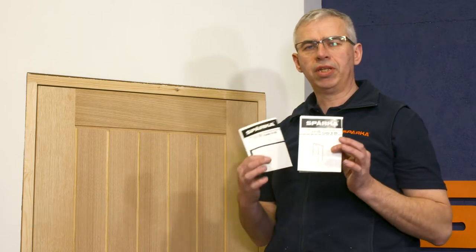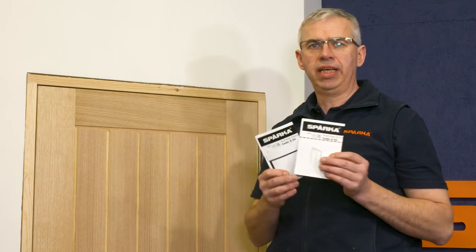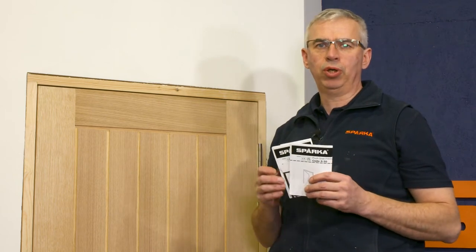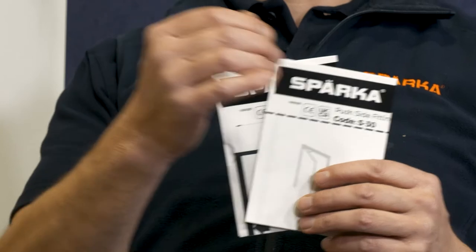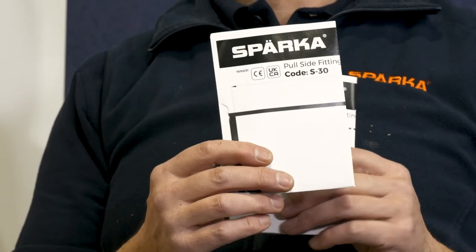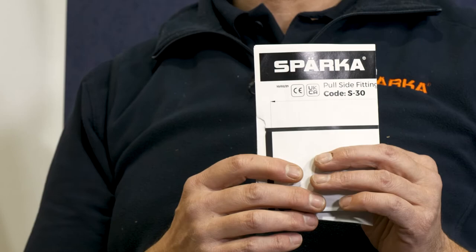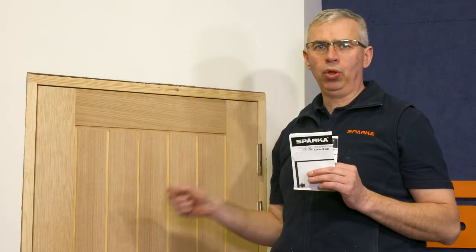Fitting an S30 door closer from Sparker. It comes with two fitting instructions. The one with the dotted lines is for fitting on the push side of the door, when you push the door open. The plain one is for fitting on the pull side of the door, when you pull the door open or pull towards you.